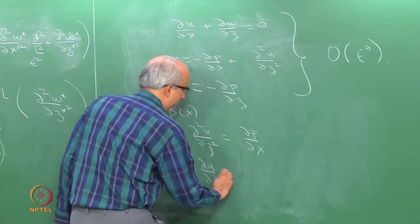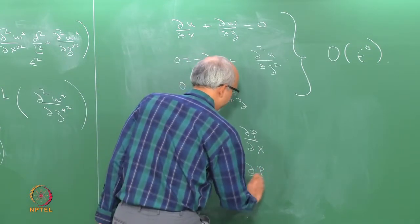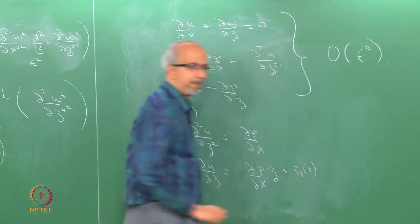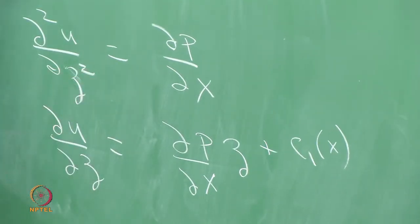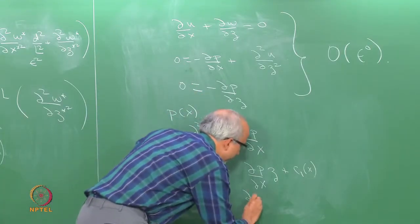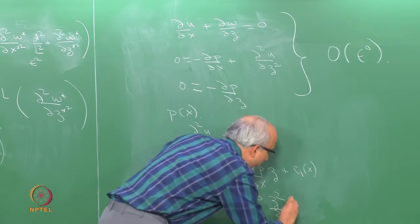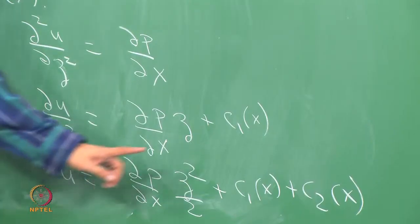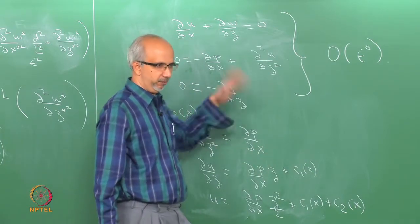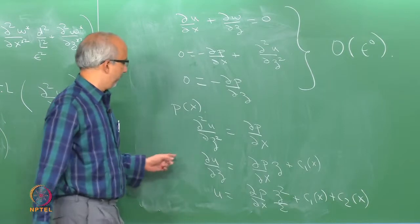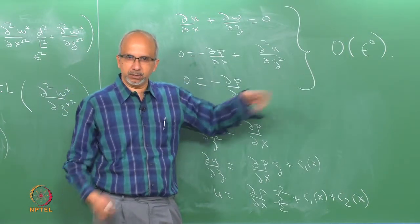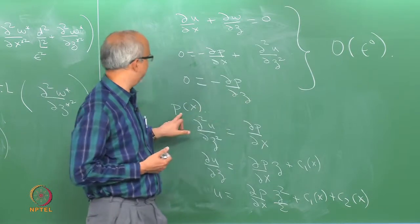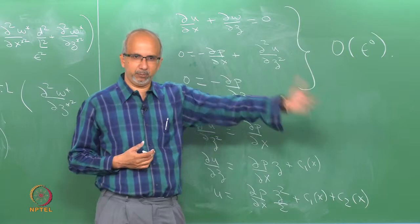Integrating once: ∂u/∂z = (dp/dx)z + c₁(x). Integrating again: u = (dp/dx)(z²/2) + c₁(x)z + c₂(x). These constants are functions of x because we have a partial derivative. Note that u can be a function of x because dp/dx can change with x — since pressure is a function of x, we allow for u to change with x as well.